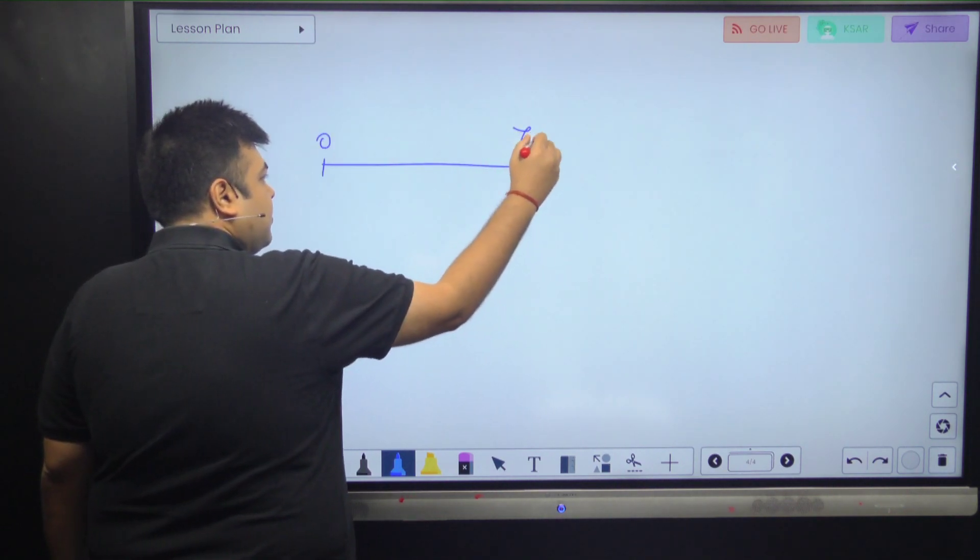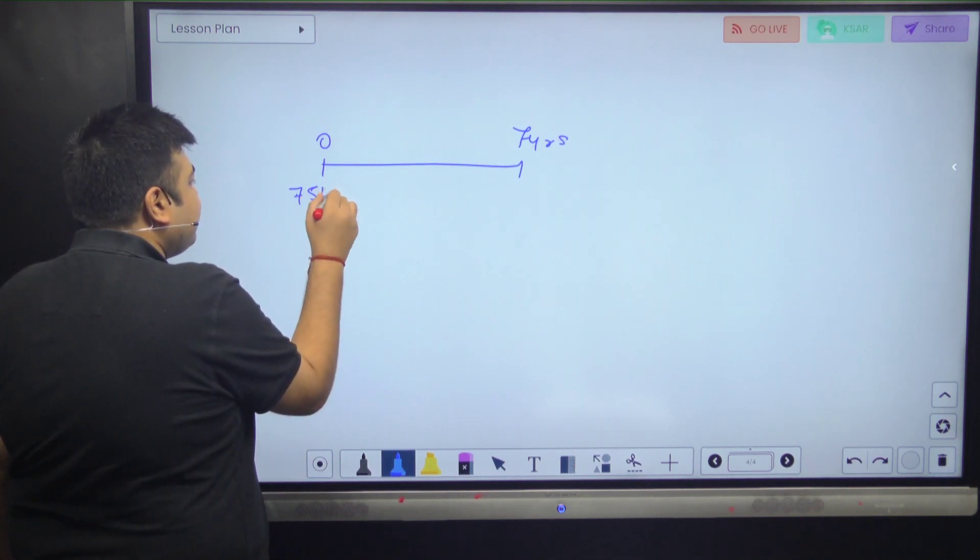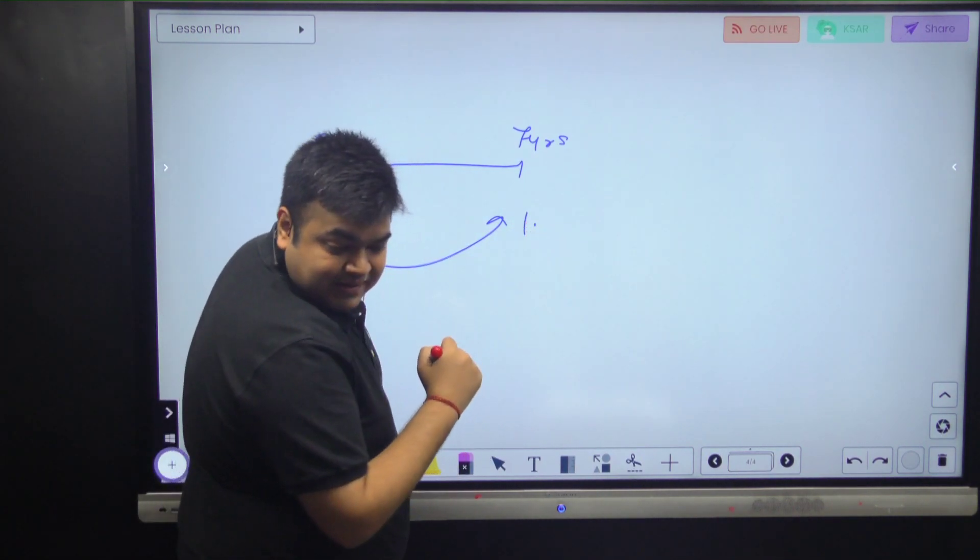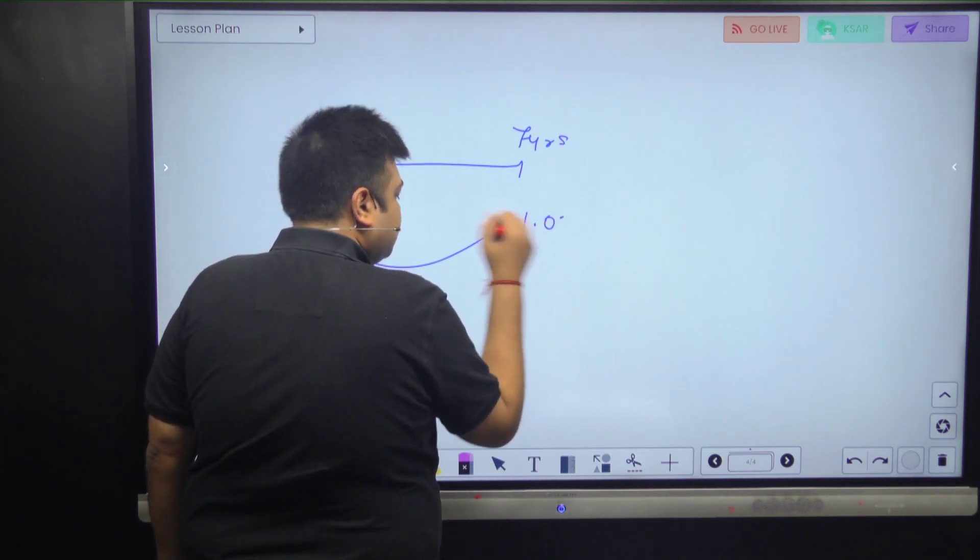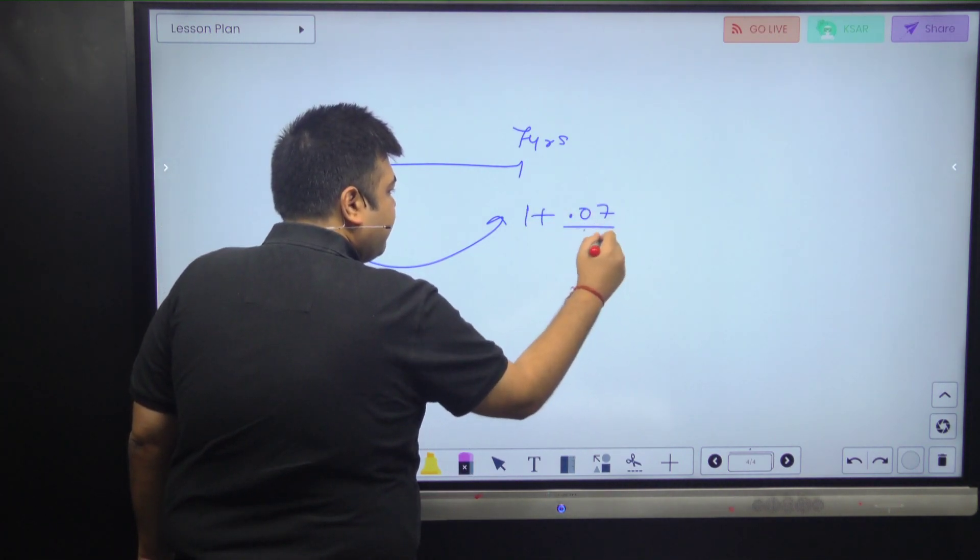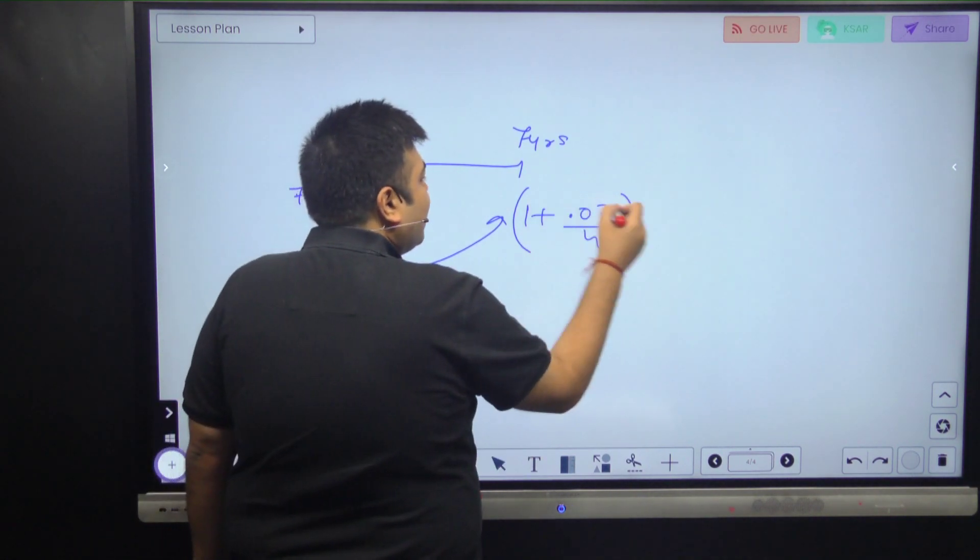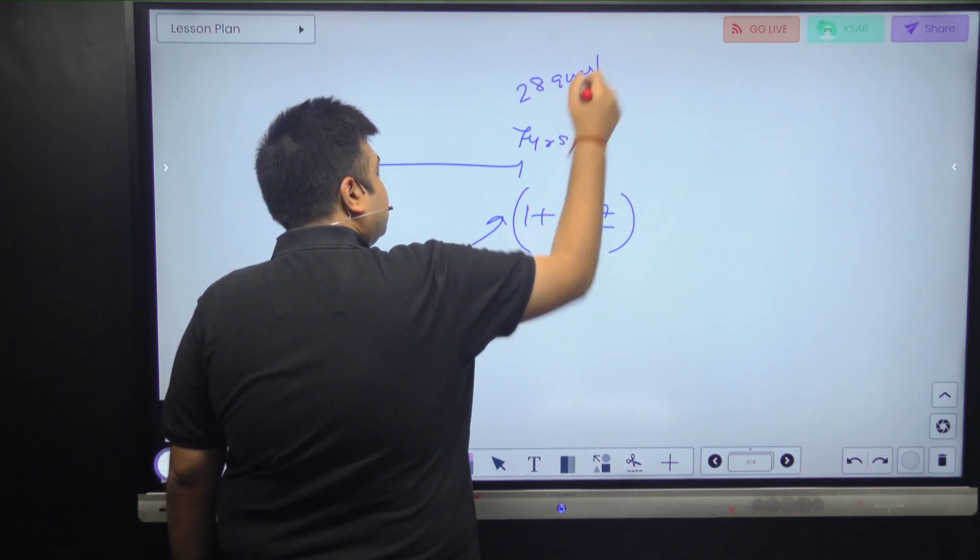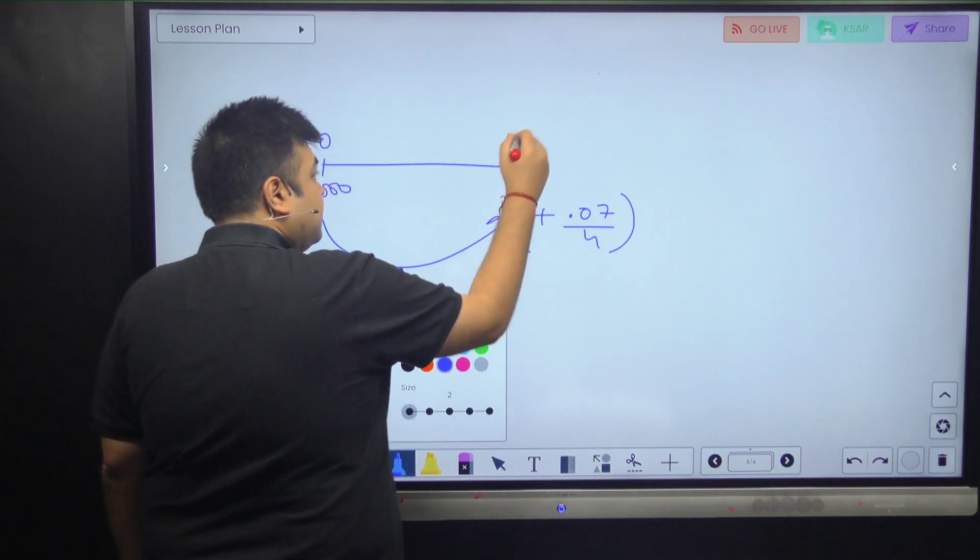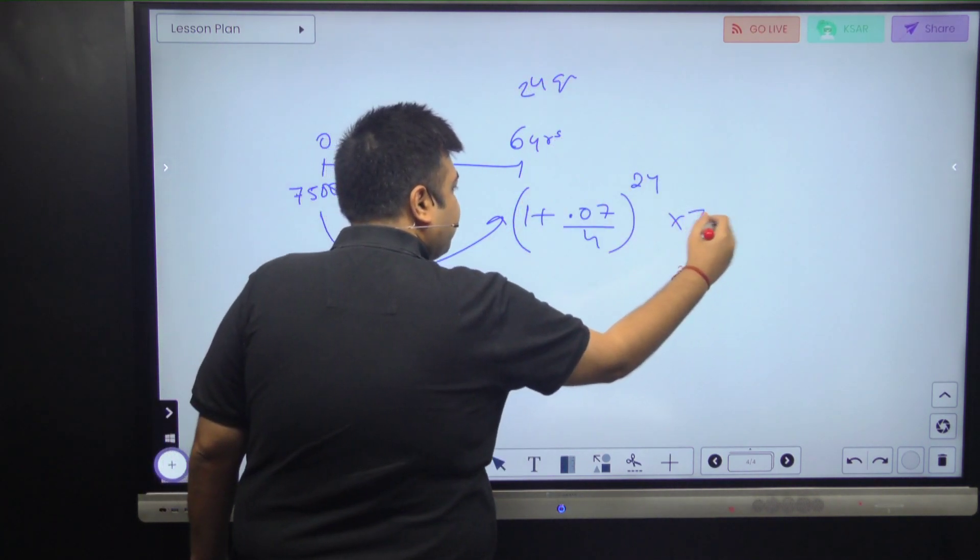So zero, six years, you're investing how much? $75,000. So what is the value over here? How I'm going to do is 1.0175. 1 plus 0.07 by 4, this is 1.0175, correct. Six years is going to be 24 quarters. So this is going to be 1.0175 to the power 24 into 75,000 is your answer.